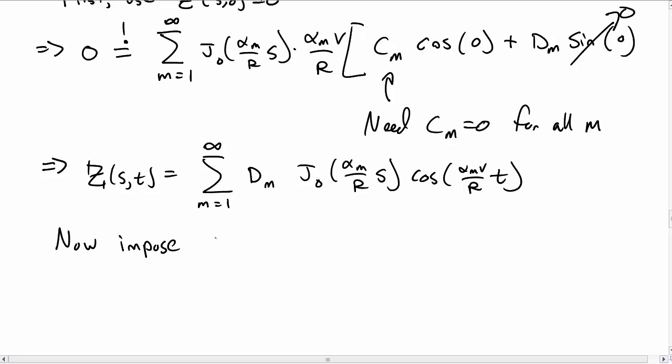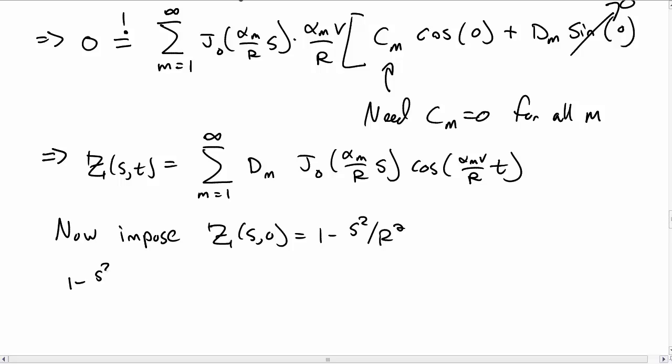So now let's impose our other initial condition, namely at t equal to 0 the membrane is initially stretched as 1 minus s squared over r squared. So 1 minus s squared over r squared must be equal to the value of our function at t equal to 0. So it's d sub m j 0 of alpha m over r times s.